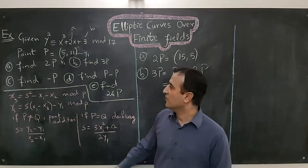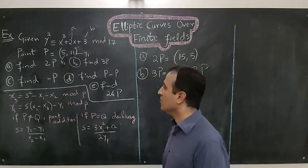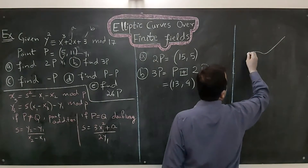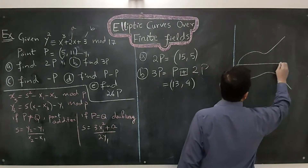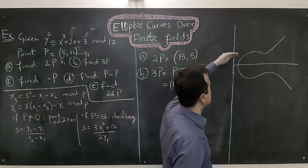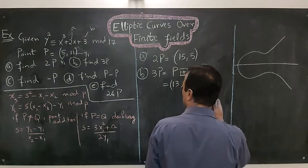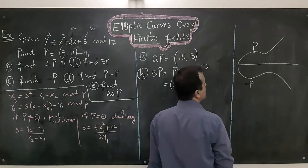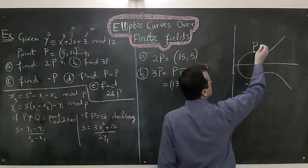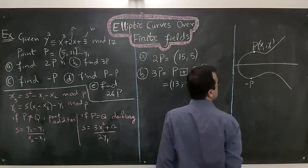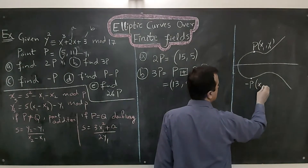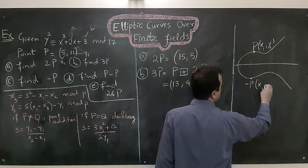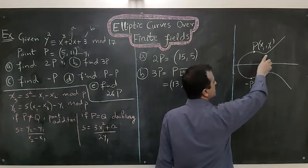Now let's do part (c): find minus P. Before finding minus P, let's understand the logic. Elliptic curves are symmetric along the x-axis — both sides are mirror images of each other. If point P is at some location on the curve, then minus P is its reflection. If P has coordinates (x1, y1), then minus P has the same x-coordinate x1, while the y-coordinate is the additive inverse of y1.